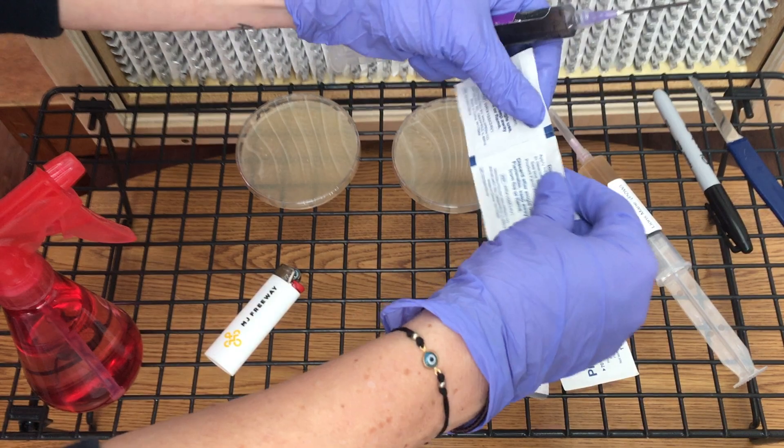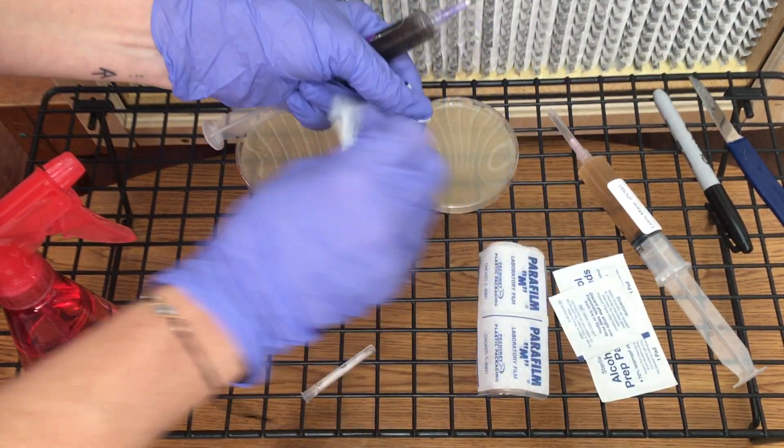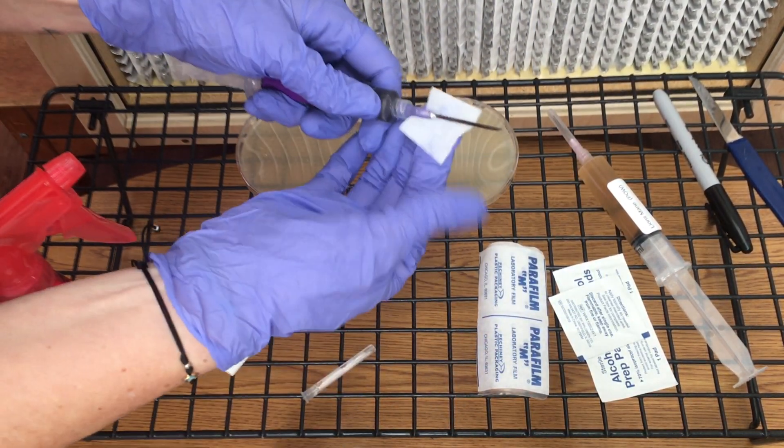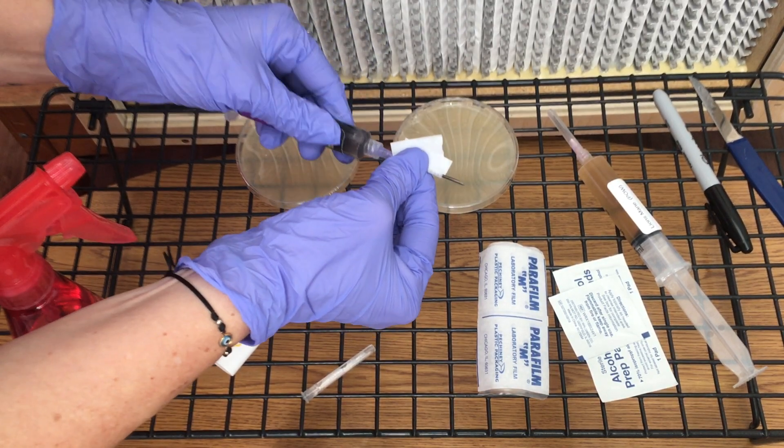Then after 30 seconds, wipe the needle with an alcohol pad to remove all the soot. You should see rust when you apply the pad to the needle.